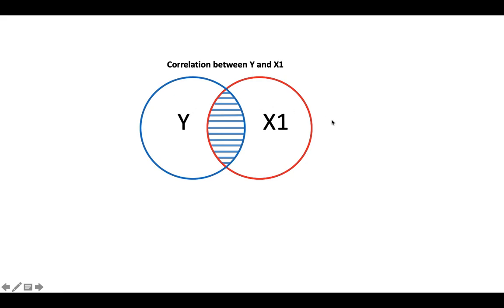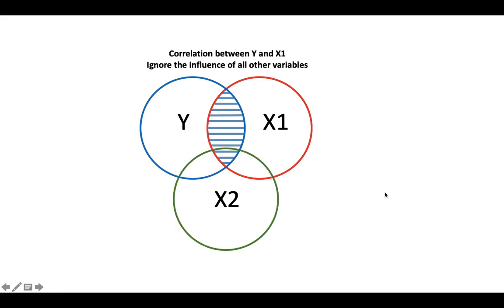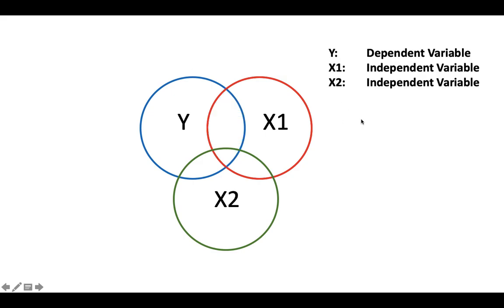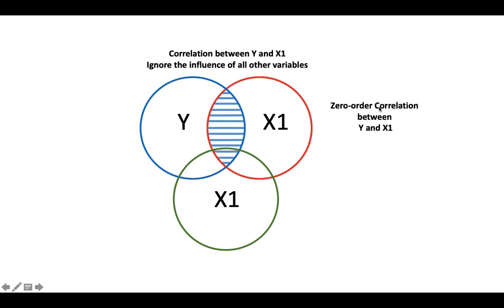This is a straightforward correlation — we're not taking anything else into consideration. Even though we have this other variable x2, we're not looking at how x2 is influencing y, x1, or both. We're just looking for the straightforward correlation between y and x1, and what we call that is the zero order correlation — a correlation between two variables irrespective of the interaction of other variables. It's a straightforward Pearson correlation.